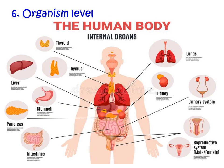The sixth is the organism level. An organism is any living thing considered as a whole that can function independently, whether composed of one cell such as a bacterium, or trillions of cells such as humans or animals. We humans are composed of a collection of trillions of cells that together form a complex of organ systems that are mutually dependent on one another.